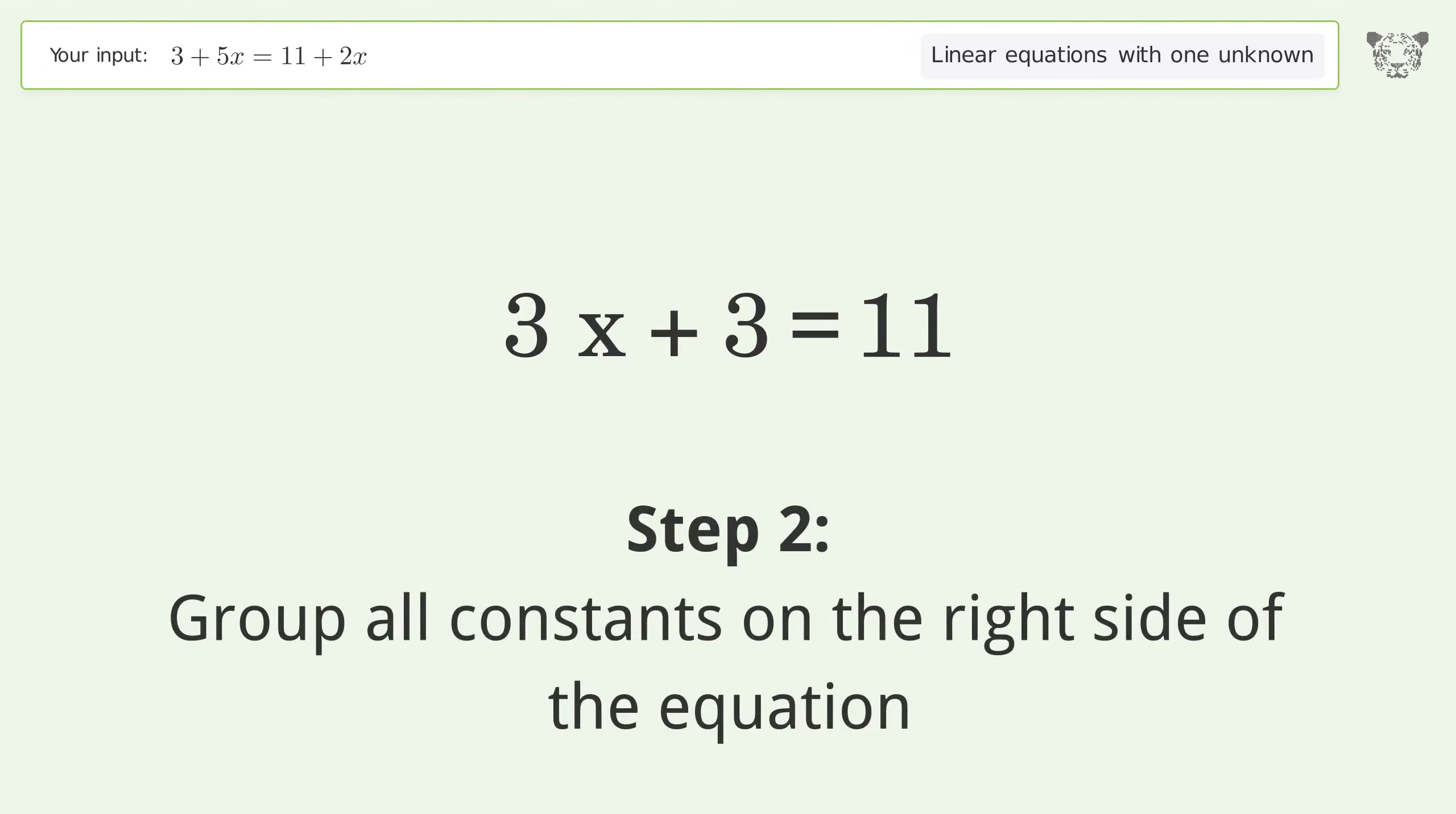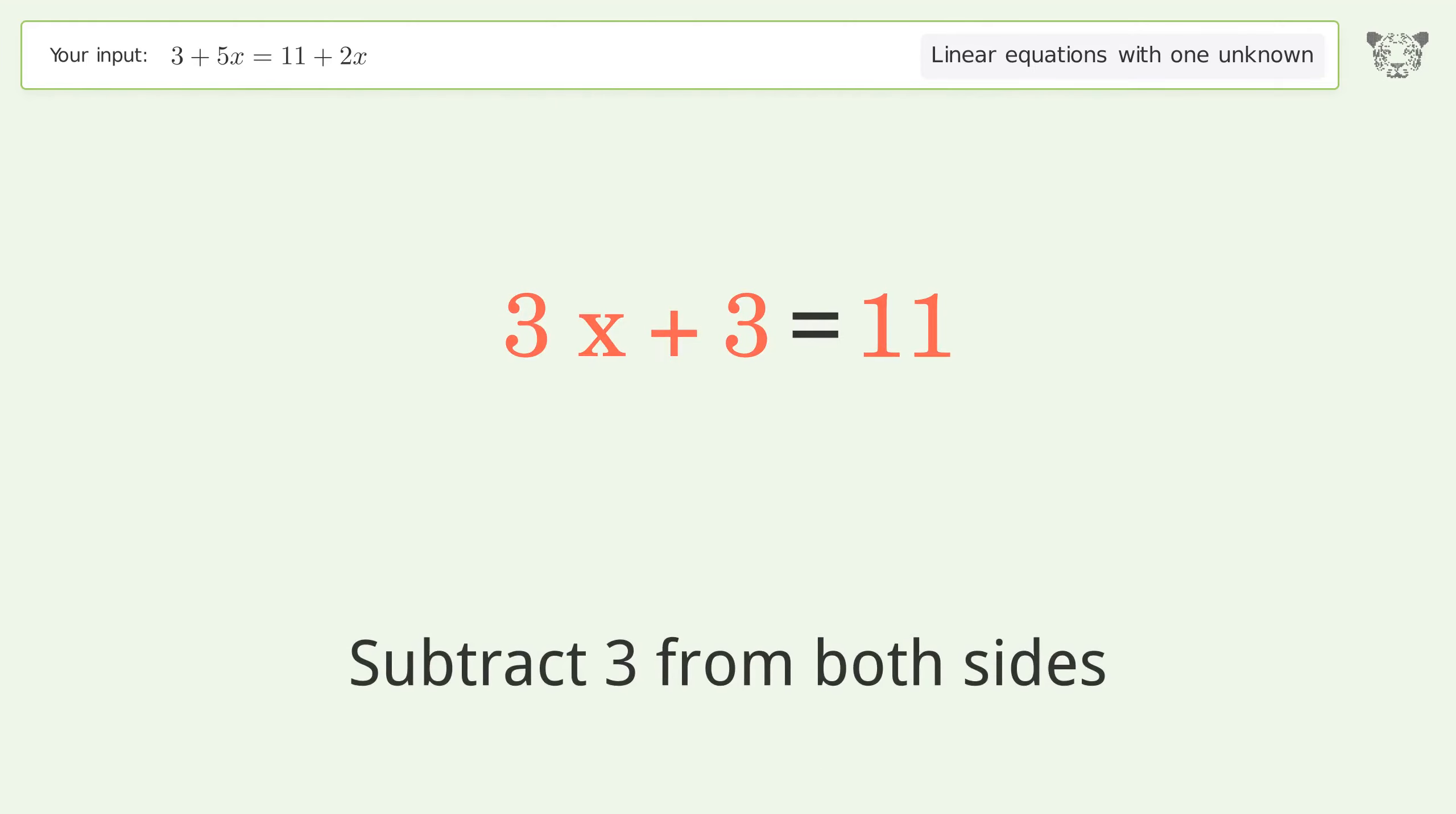Group all constants on the right side of the equation. Subtract 3 from both sides.